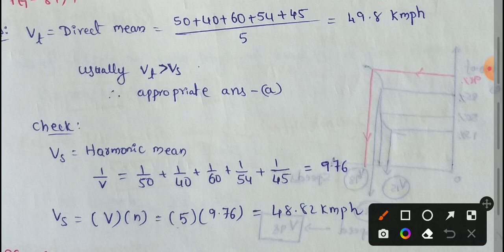Time-mean speed and space-mean speed. We have five observations. Vt equals the direct mean: 50 plus 40 plus 60 plus 54 plus 45, divided by 5.